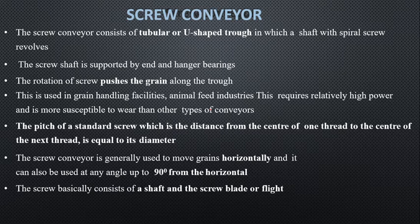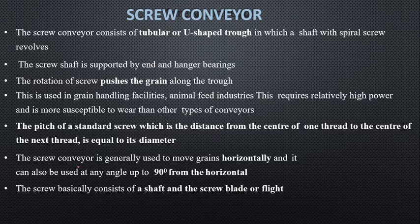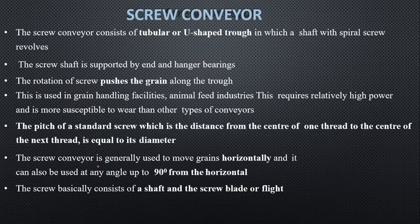The pitch P is the standard screw pitch, which is equal to the distance from the center of one thread to the center of the next thread, and is equal to the diameter of the standard screw. This conveyor is generally used to move grain horizontally, and can operate at angles up to 90 degrees from the horizontal.